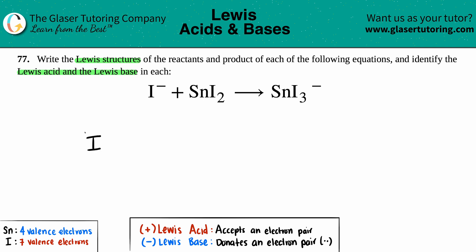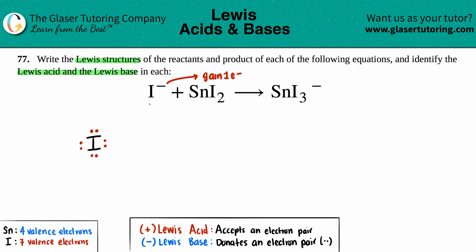I⁻: we have just one iodine, and it has seven valence electrons — one, two, three, four, five, six, seven. The negative charge means it gained one electron, so I'll add that one here, giving it eight electrons total. It now satisfies the octet rule, and since this is the only element, it carries the negative charge.